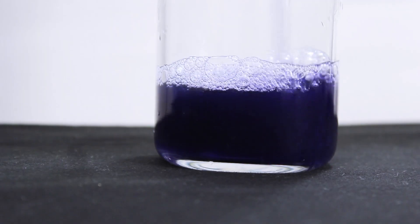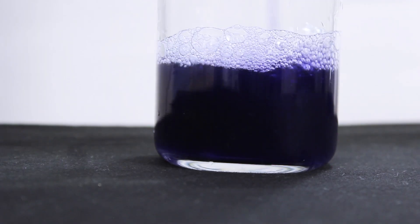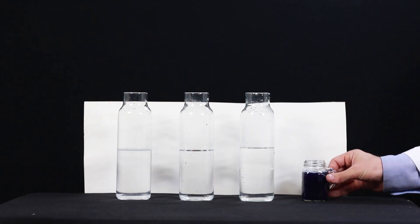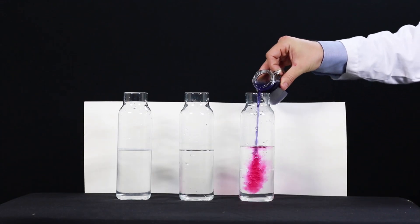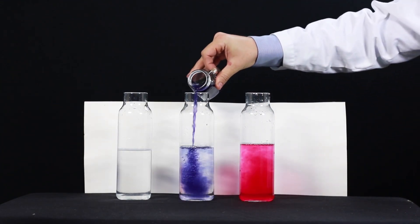This dark purple liquid is your acid-base indicator. Acid-base indicators change color according to the pH or acidity of a solution.